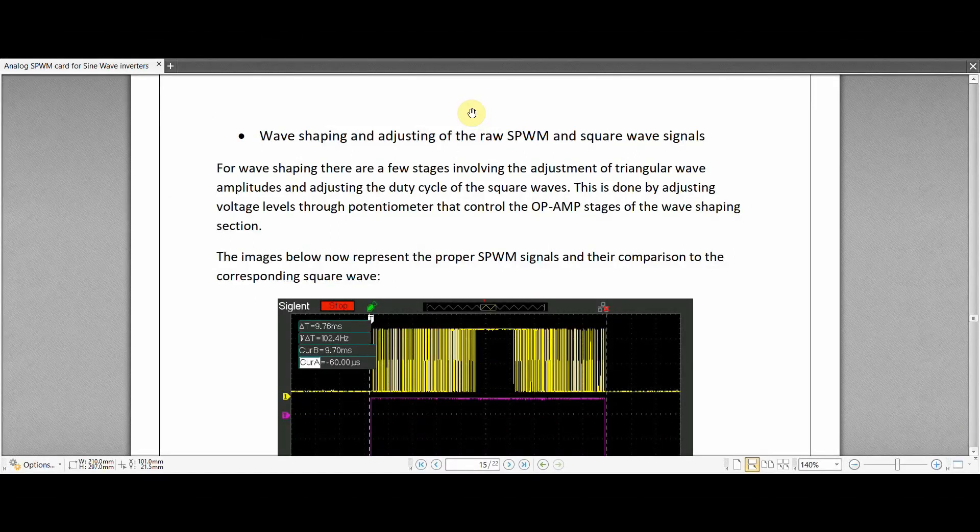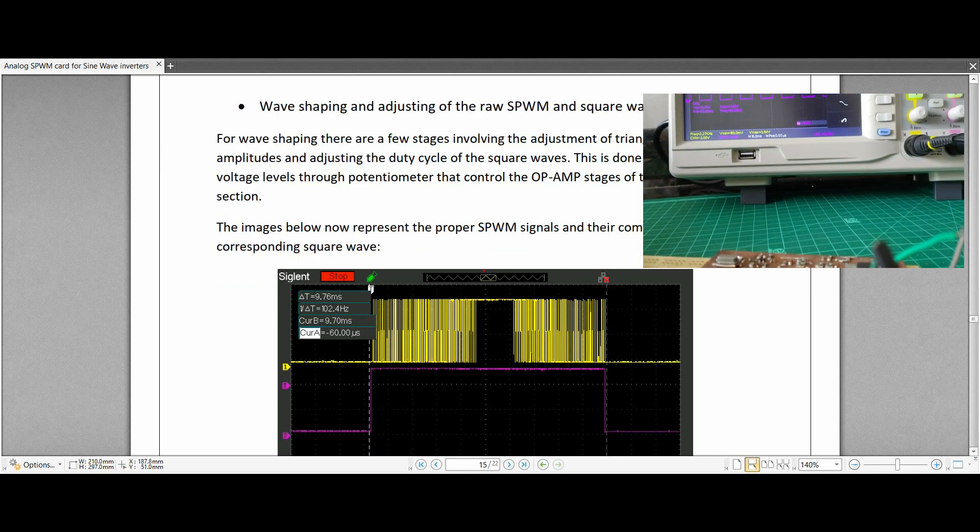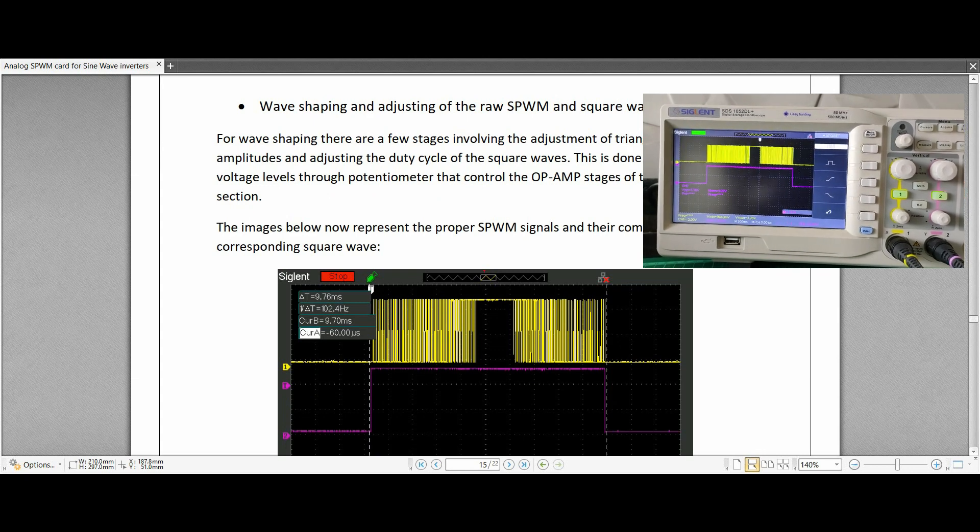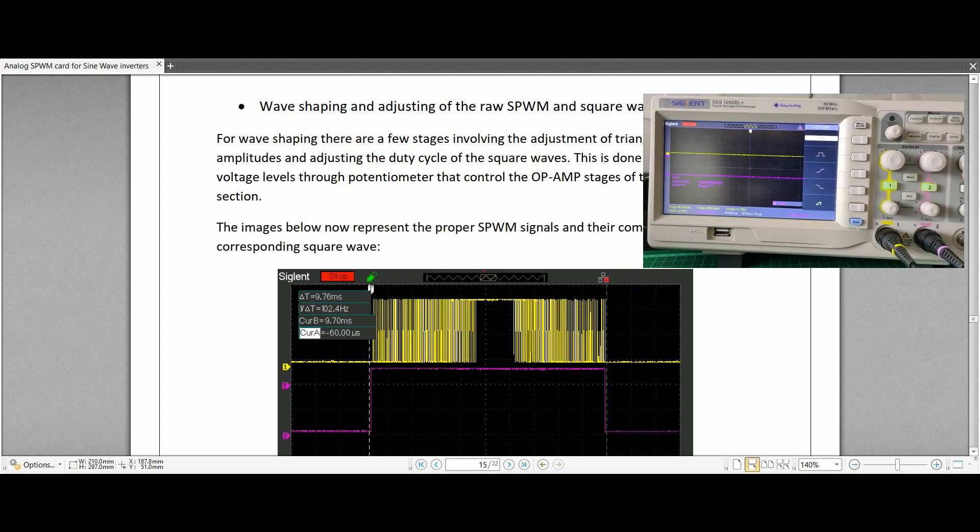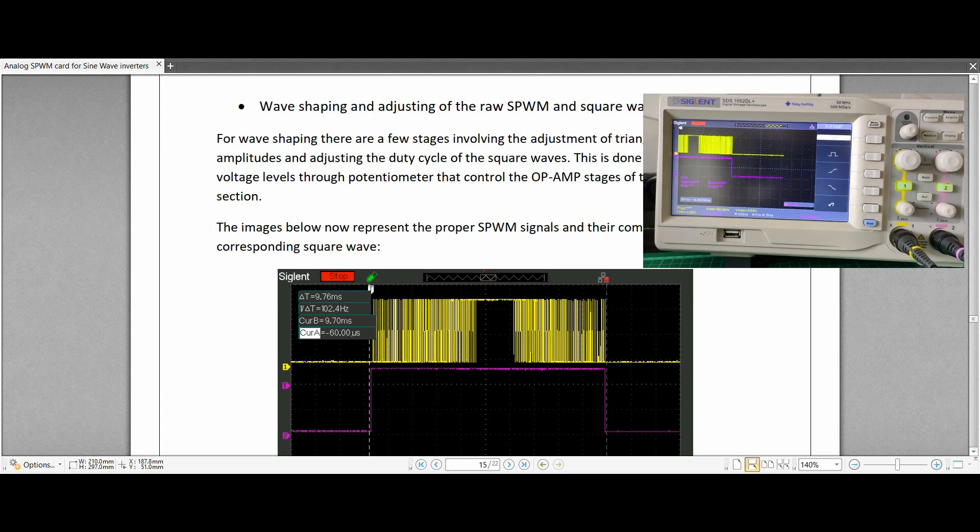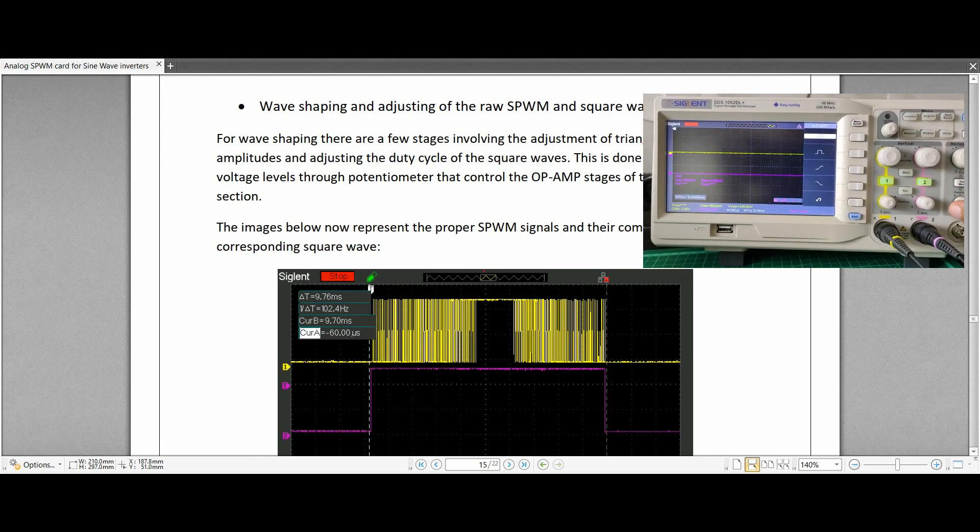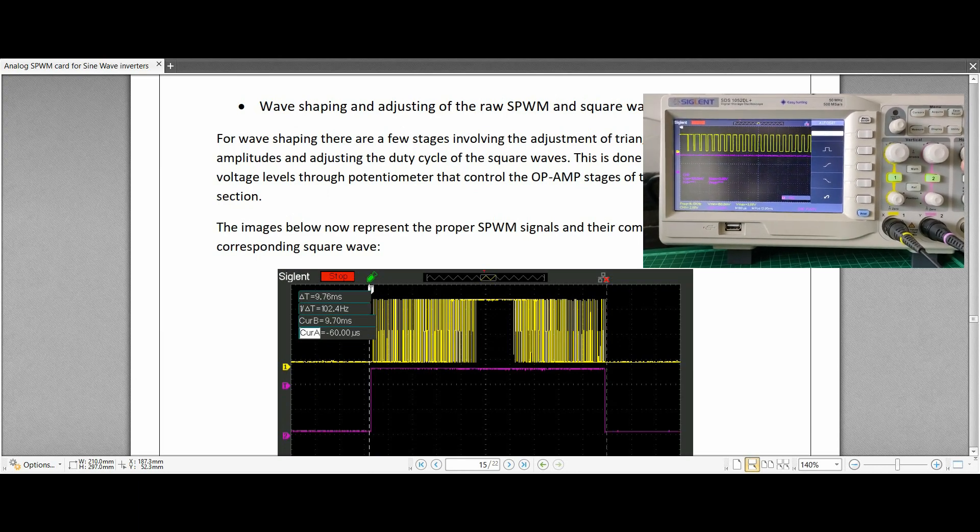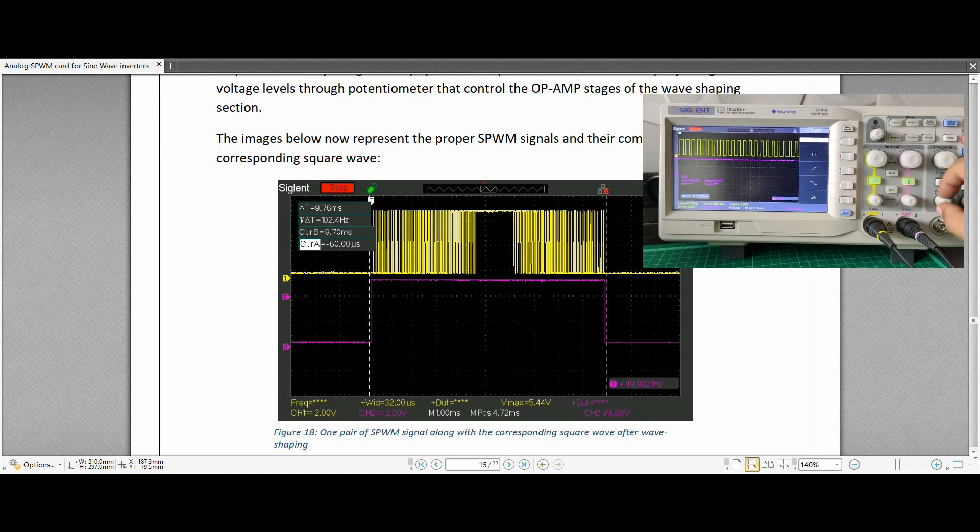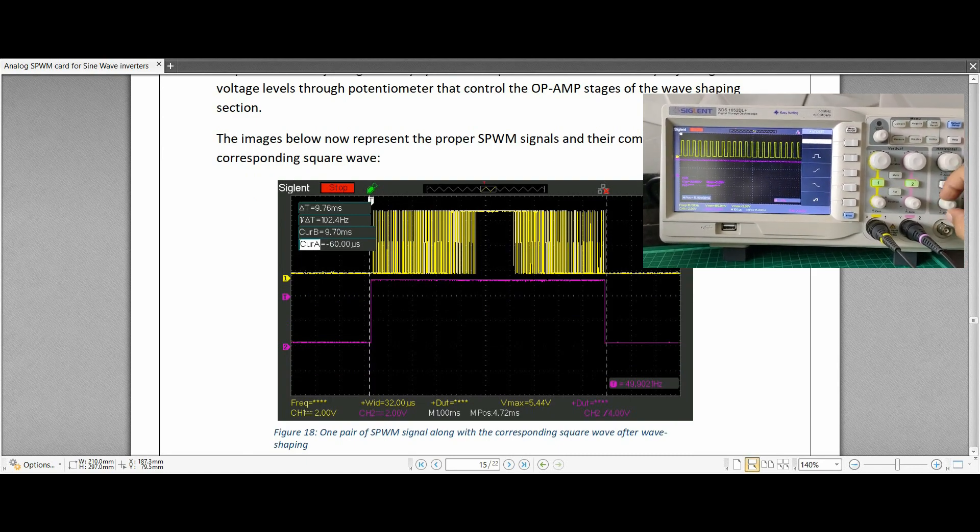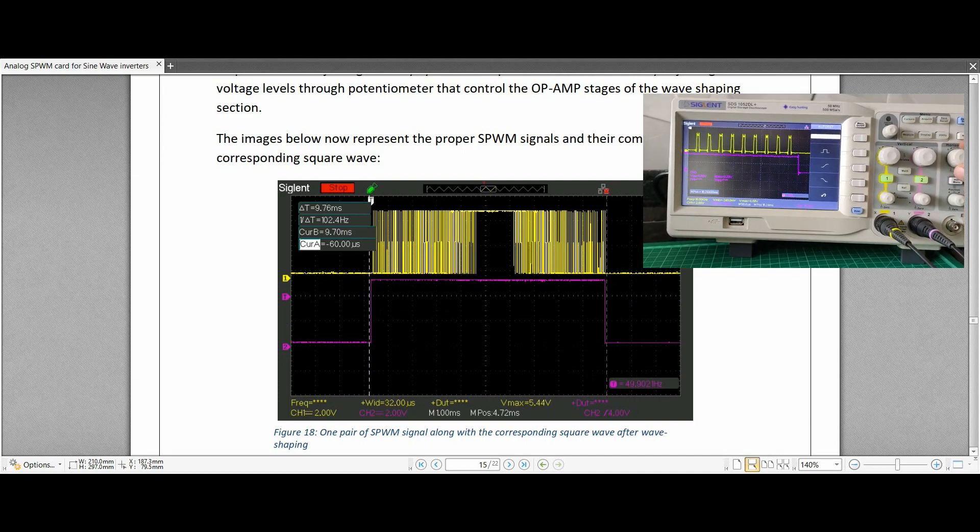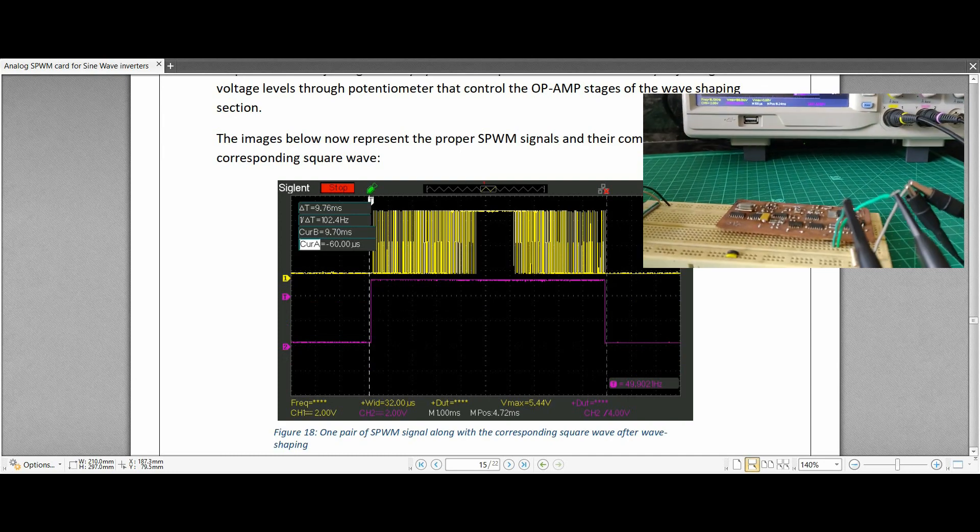With the complementary pair of square waves generated, it is now time to have a look at how the SPWM signal along with its corresponding square wave signal looks like. The SPWM signal needs to have a little bit of wave shaping so as to keep the entire shape and size of the pulse width constant. This involves adjusting the voltage levels of few operational amplifiers and adjusting the amplitude of the triangular waves as well. The image here represents how the corresponding SPWM signal and the square wave look like. This SPWM and the square wave create a pair which can be given to the diagonal pair of the H-bridge for the first half of the signal.